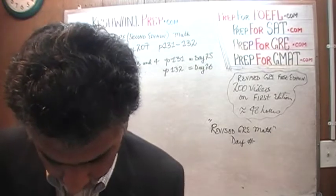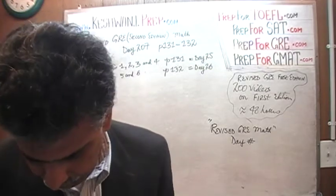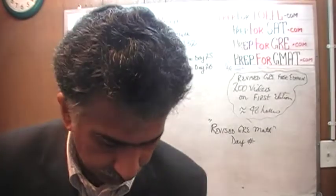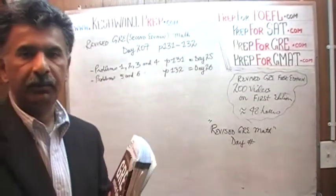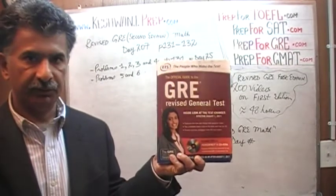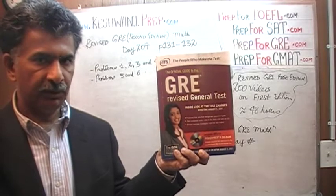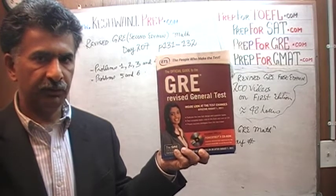If you turn to page number 131, you will see that there are four problems on that page. All of those four problems on page 131 that you see in the second edition are the exact same problems that appeared in the first edition. And since I have solved all the math problems in the first edition, I am going to simply tell you which video to watch to see the solutions.